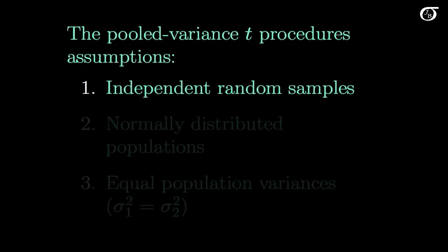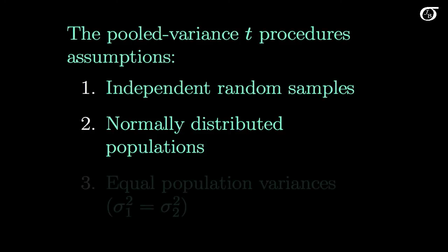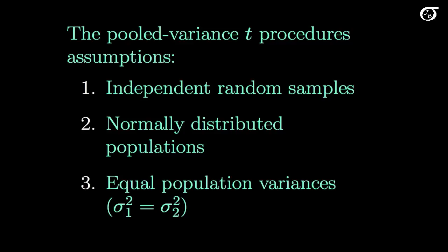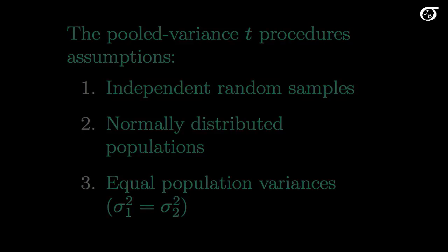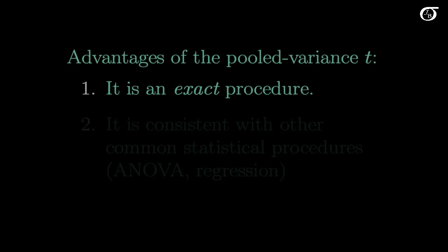The pooled variance t-procedure assumptions are that we have independent random samples from normally distributed populations, and that the population variances are equal. The advantage of this procedure is that it is an exact procedure — if those assumptions are perfectly true, our test statistic will have exactly a t-distribution, which is nice.